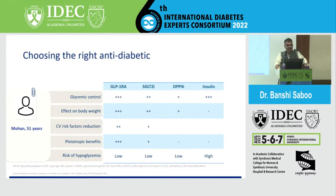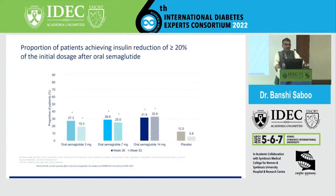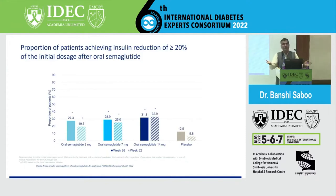For effect on body weight: maximum reduction is with GLP-1; SGLT2 will also reduce some weight; DPP4 is weight neutral; insulin may actually increase weight. Cardiovascular risk factor reduction is significant with both GLP-1 and SGLT2. The proportion of patients achieving insulin reduction of more than 20% with initial doses after oral semaglutide is notable — when we add GLP-1 to patients on insulin, we see significant reduction in insulin dose, particularly for prandial or premixed insulin.